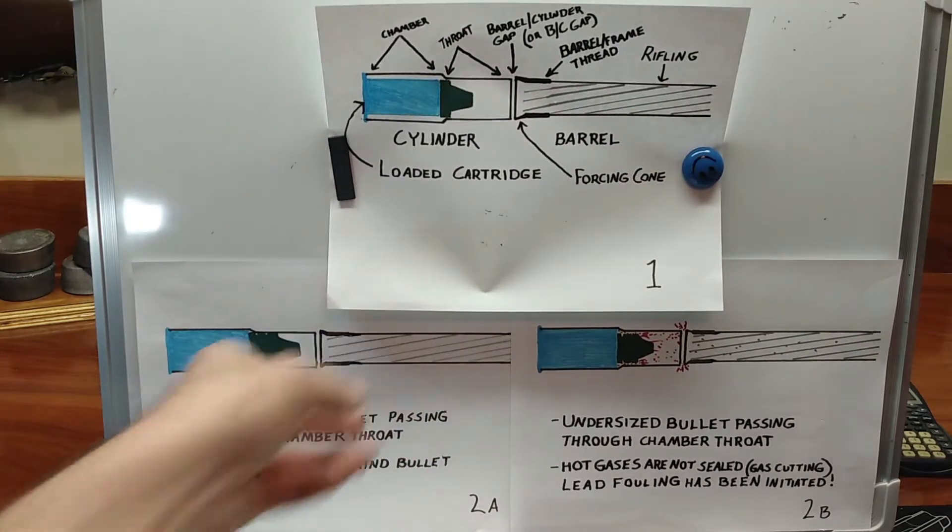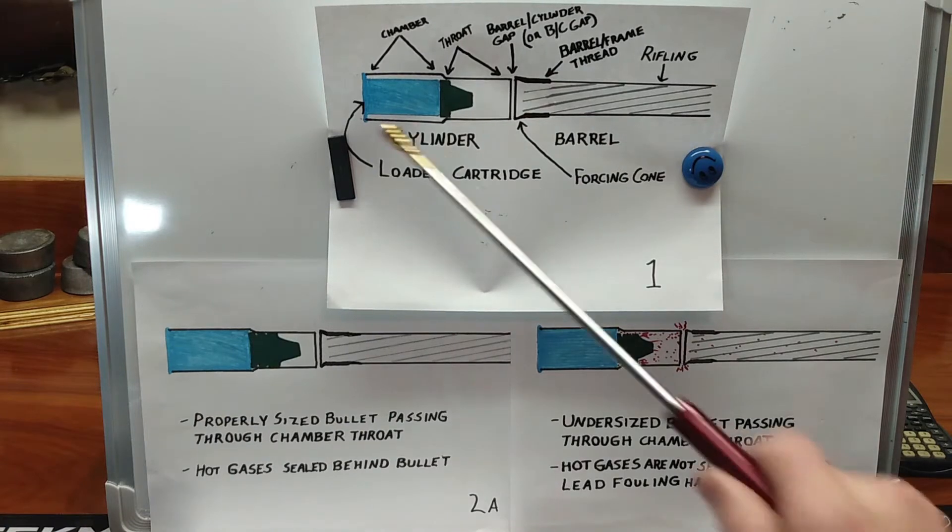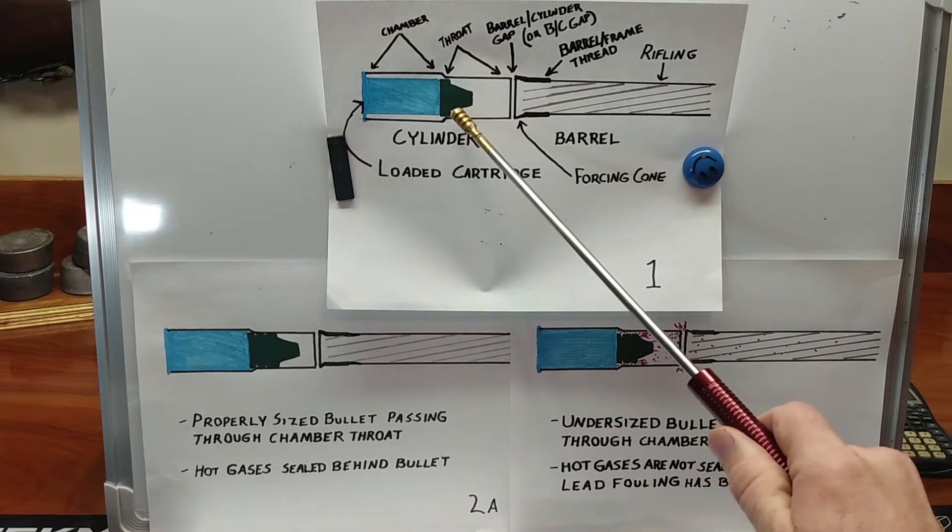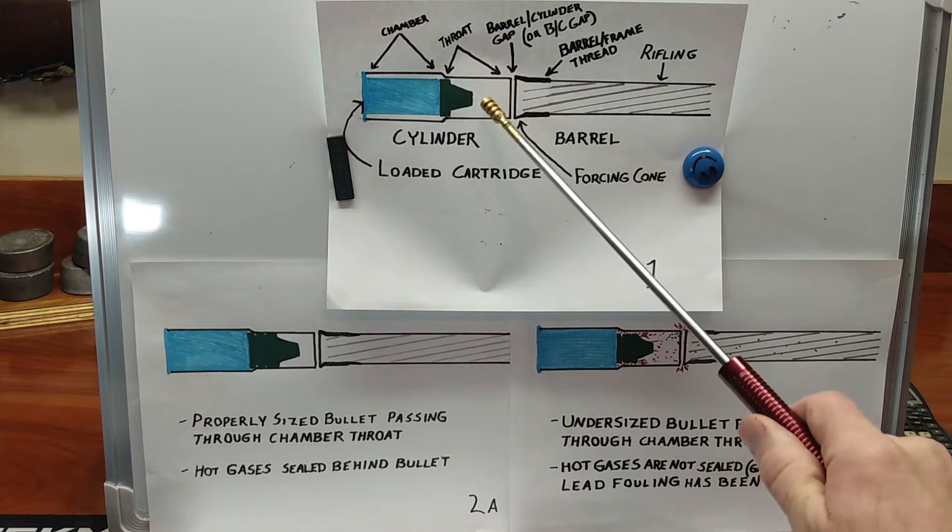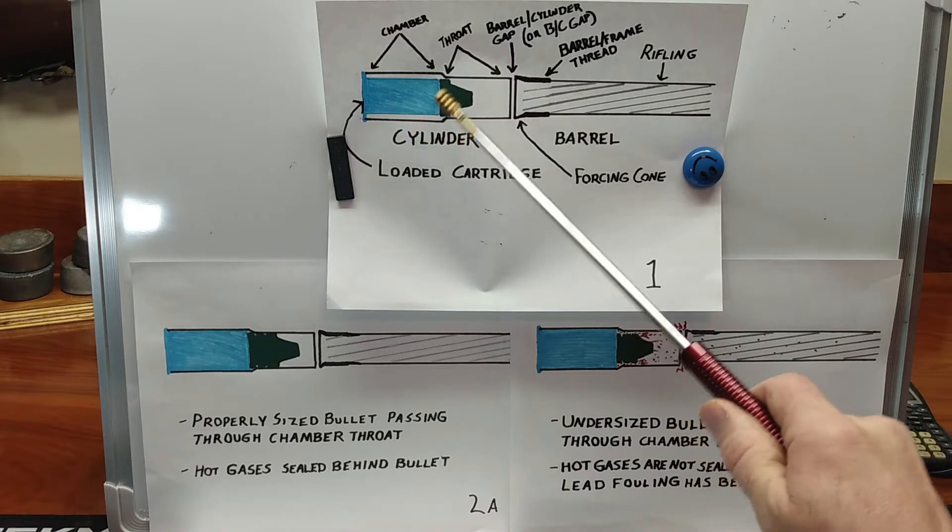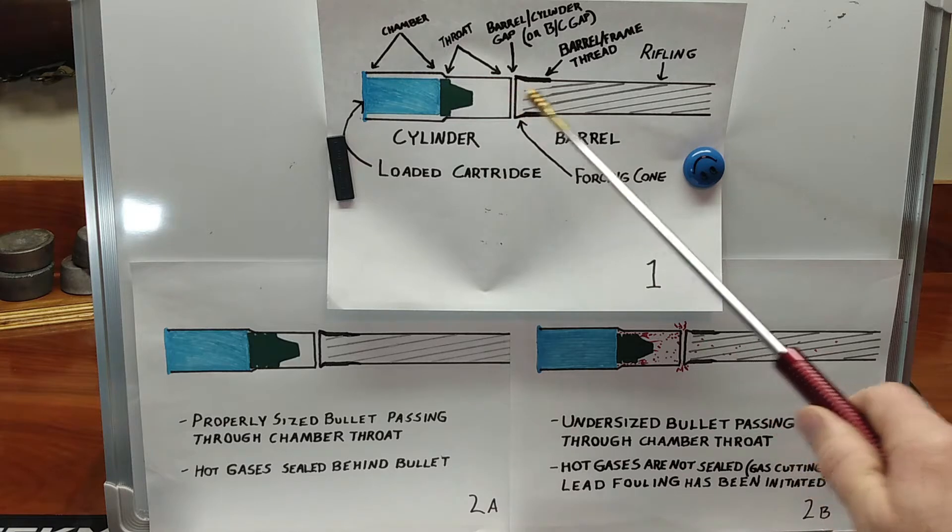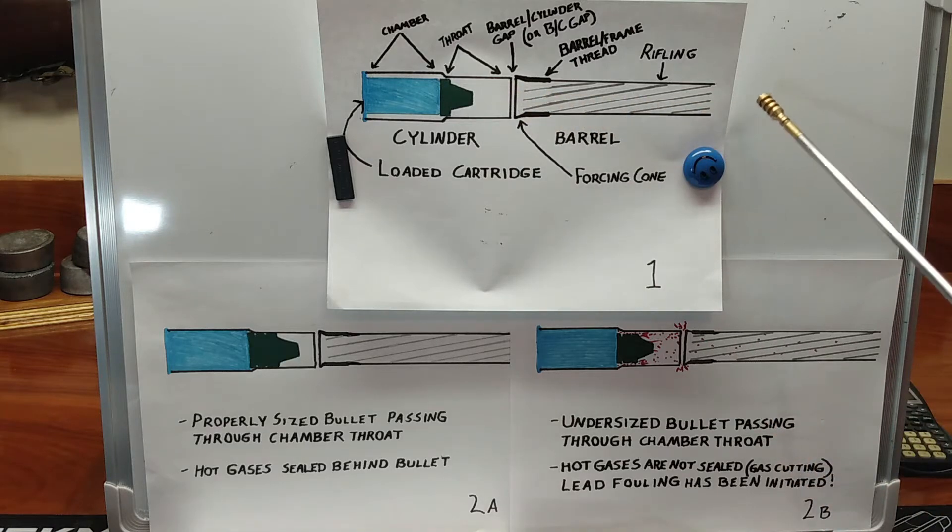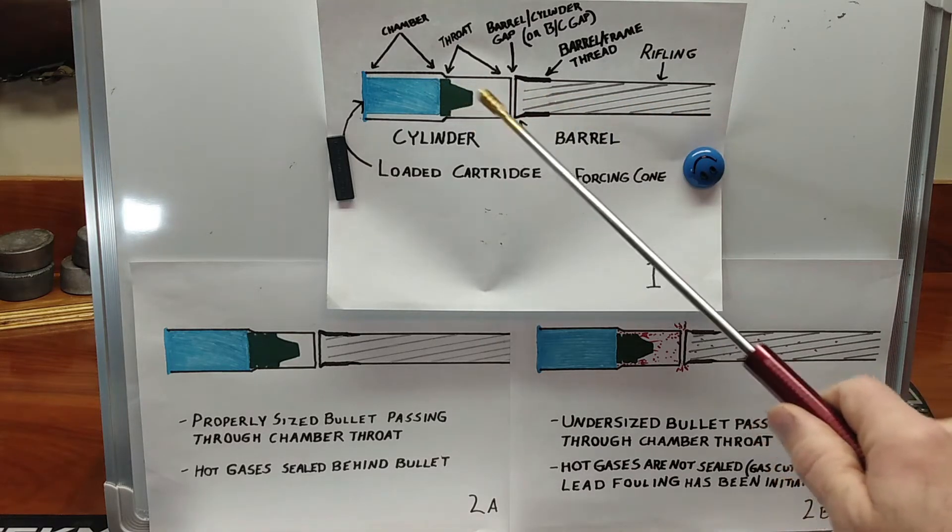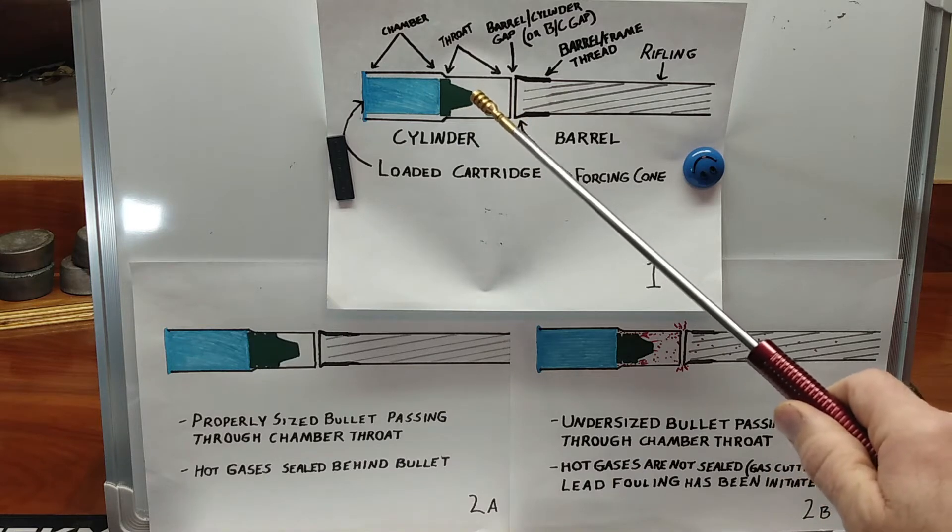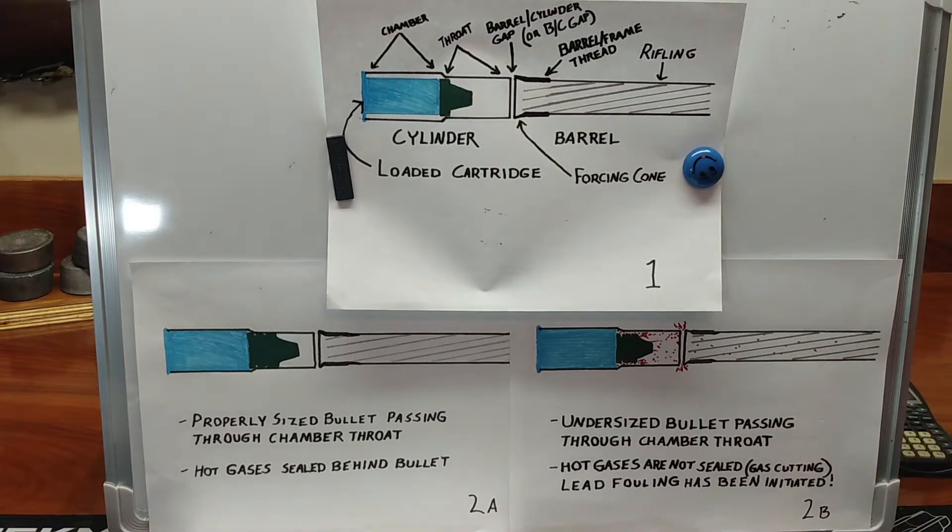You've already seen this one here. Cartridge. This is the bullet. This is the throat. Throat diameter smaller than the rest of the chamber. Throat guides the bullet straight into the barrel. At least, that's the purpose of it. If our bullet fits the throat properly, that's what we've been discussing. There are some ramifications of what can happen if our bullet does not fit the throat.